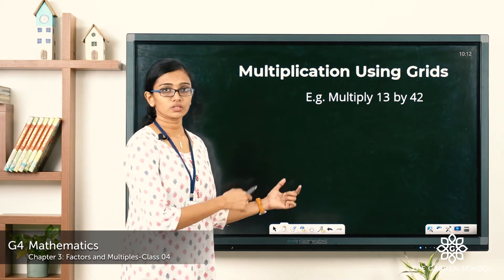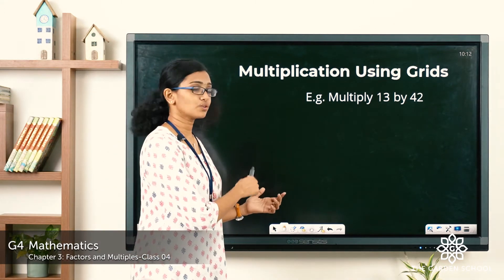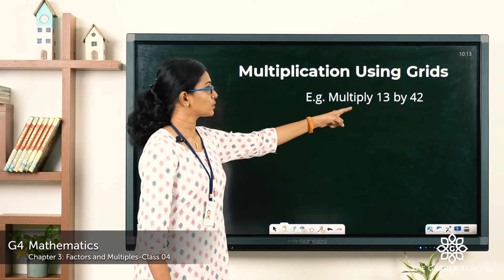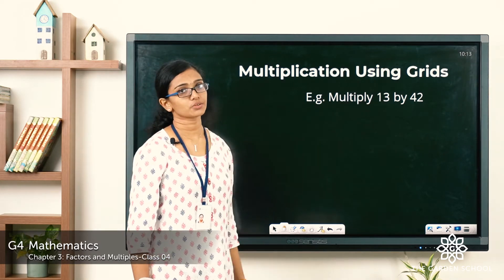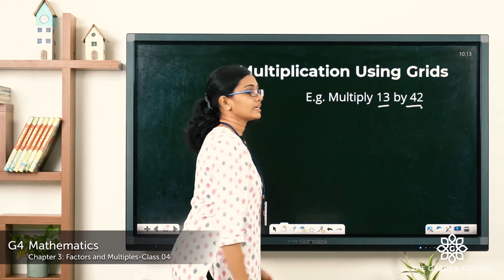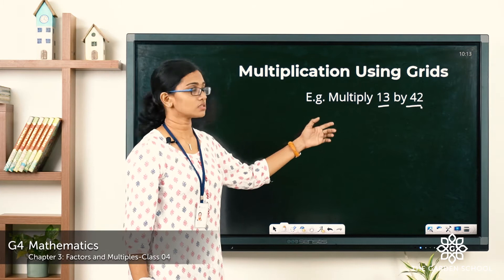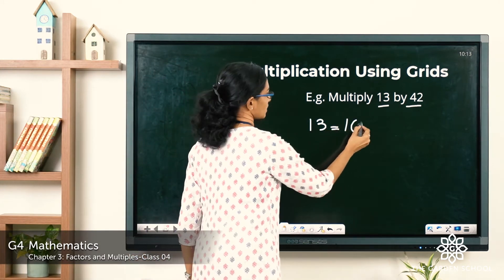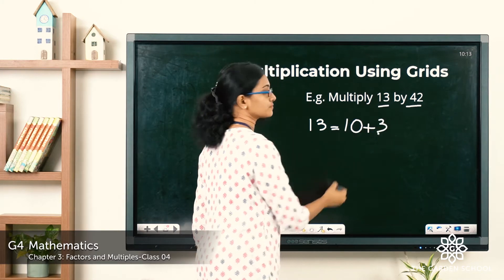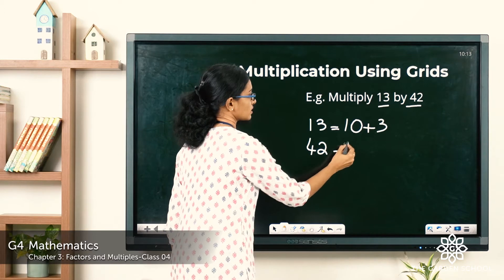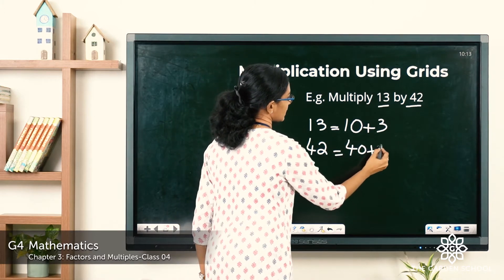So that was a multiplication of a two-digit number by a one-digit number. So here in this example, we'll see a two-digit number multiplied by a two-digit number. In this case, 13 can be written as 10 plus 3, and 42 can be written as 40 plus 2.